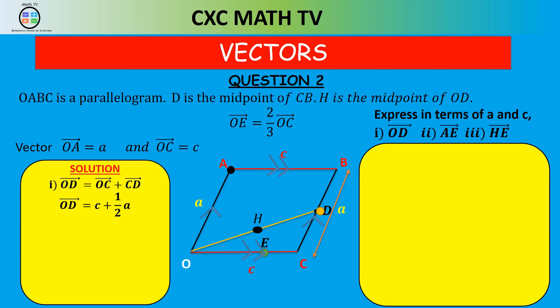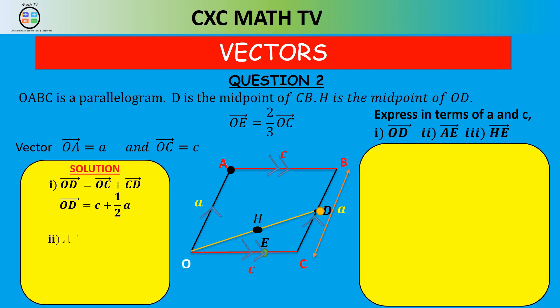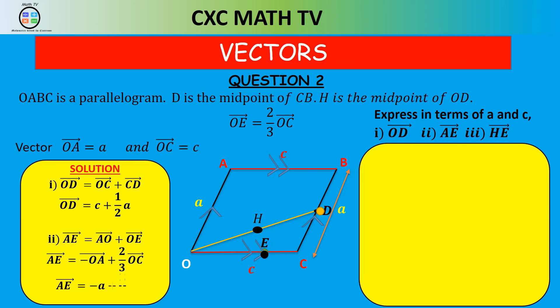For vector AE, going from A to E we go from A to O then from O to E. AO is minus OA, and OE is two thirds of OC. So AE equals minus A plus two thirds C.